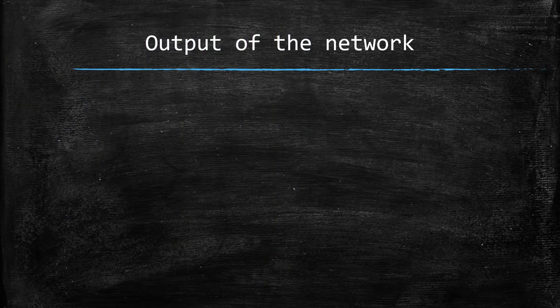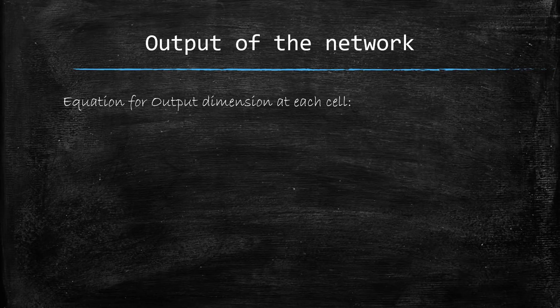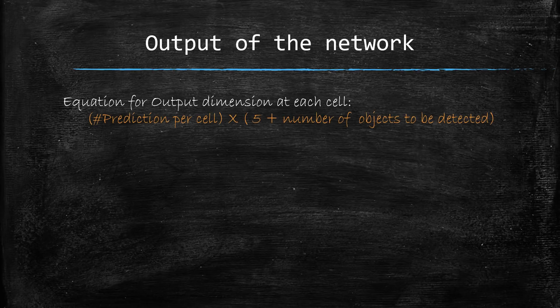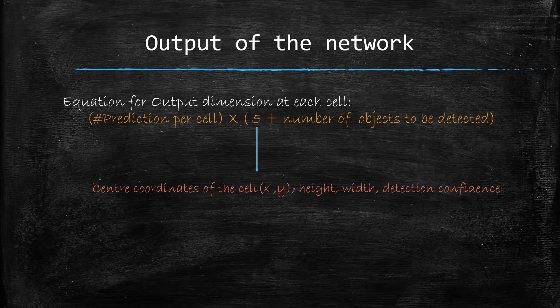Now let's study the output of the network. The equation for output dimension at each cell is: number of predictions per cell × (5 + number of objects to be detected). The 5 accounts for 5 coordinates: the center coordinates Tx and Ty (x and y), the height and width (that's 4), and then the detection confidence — the probability that this cell contains the center of a particular object.